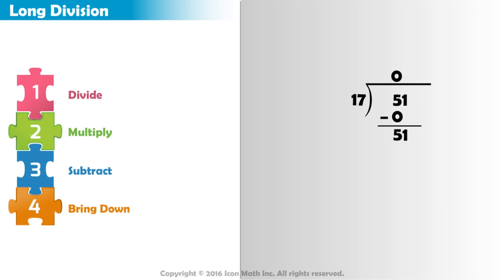We must repeat the same steps of the DMSB again. How many sets of 17 are in 51? Since most of us don't know the multiplication facts for 17, we start by rounding to make an estimation.